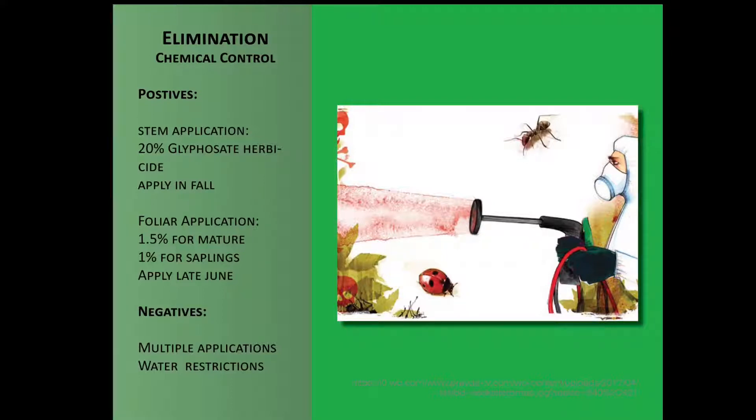These chemicals cannot be used in environments with standing water, though, and may need multiple treatments. A foliar spray of 1.5% glyphosate solution can be applied to mature shrubs or 1% solution for saplings. Drift and runoff are the biggest concerns because this is a non-selective herbicide, killing anything in its path.